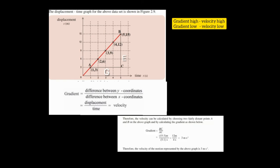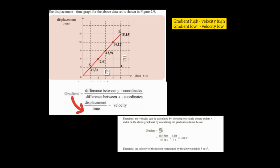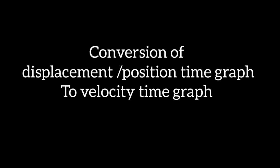Here you can observe that I have selected two distant points to find the gradient. This is because using two distant points gives a more accurate result. We know the equation that velocity equals displacement over time. The gradient equals the difference between y-coordinates divided by the difference between x-coordinates. Here, the difference between y-coordinates is the displacement of the body during the time interval, and since the x-axis represents time, the difference between x-coordinates is the time interval. Therefore, displacement divided by time gives us the velocity.